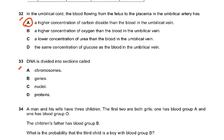Question 33. DNA is divided into sections called genes. We have a chromosome made up of DNA, and there are sections within it which are called genes — for example, a gene for hair color or a gene for blood group.